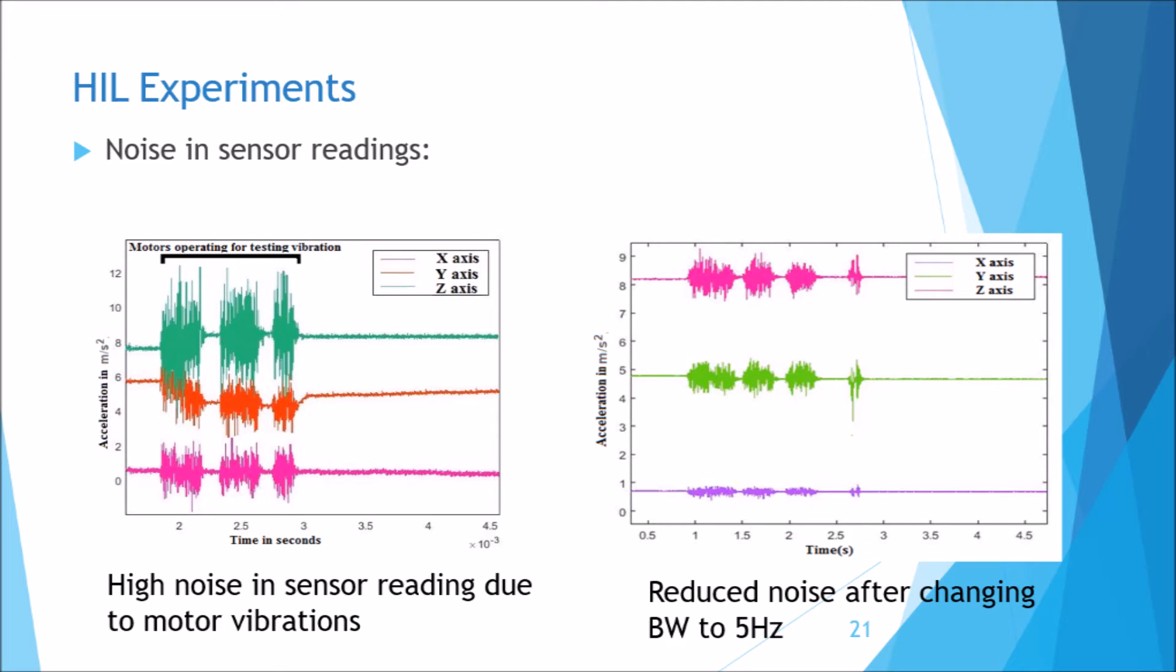The diagram shown on the left hand side shows the effect of motor vibrations on the sensor readings. This issue was fixed by reducing the bandwidth of the internal low-pass filter of the MPU 6050 to 5 hertz. As seen on the diagram in the right hand side, the noise has significantly reduced.